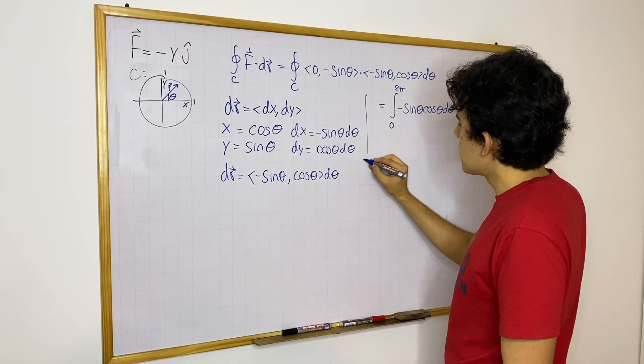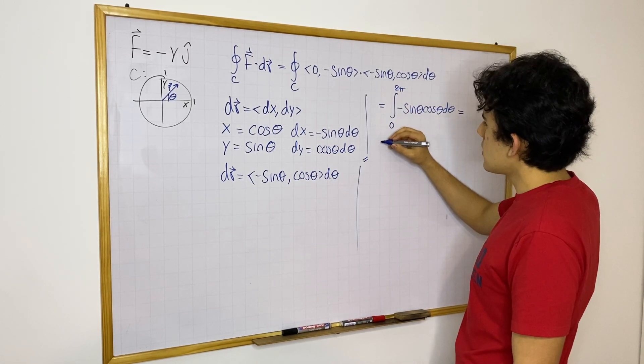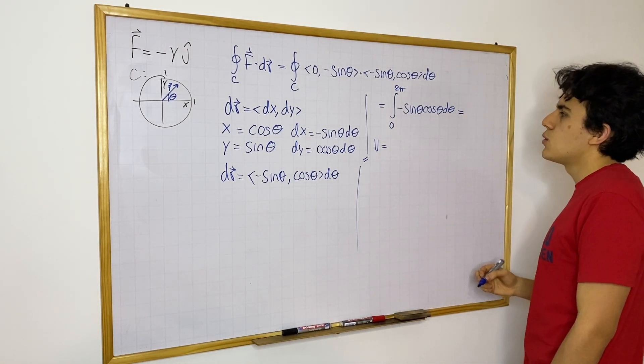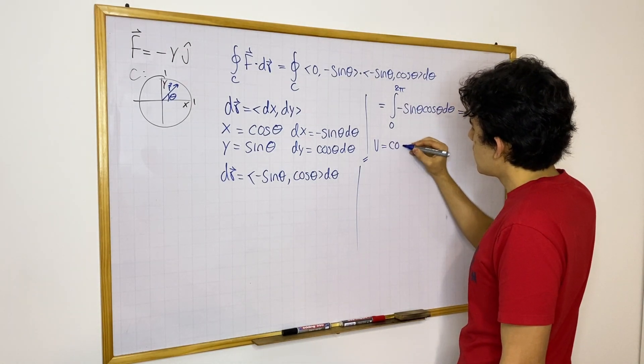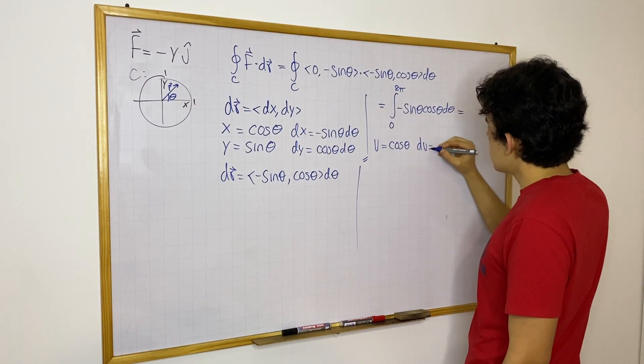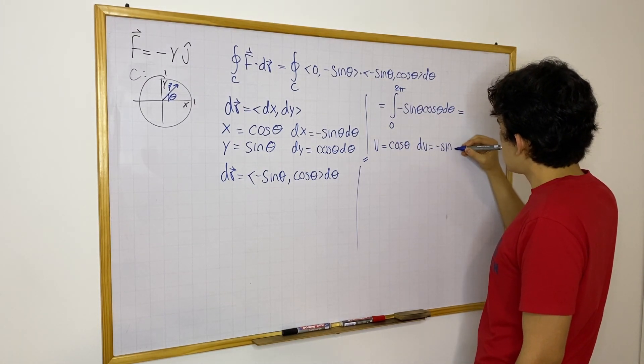We could say, I'm going to separate this. Let's say u is going to be equal to, we could definitely do u equals cosine theta. And then we have that du is going to be equal to minus sine theta.